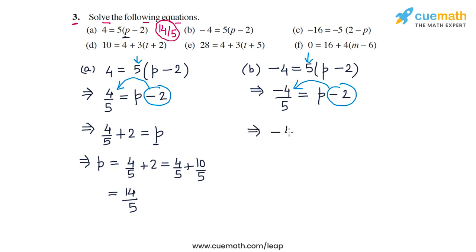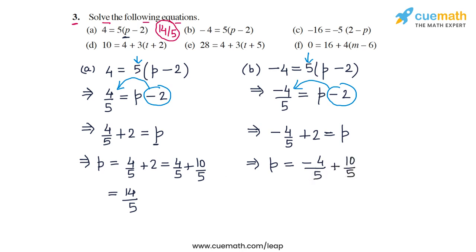We transpose the minus 2 to the left side so that it becomes plus 2. So we get -4/5 + 2 = p. Writing 2 as 10/5, we get minus 4 plus 10 equals 6 in the numerator, and 5 in the denominator. So the solution of the equation in part b is p = 6/5.